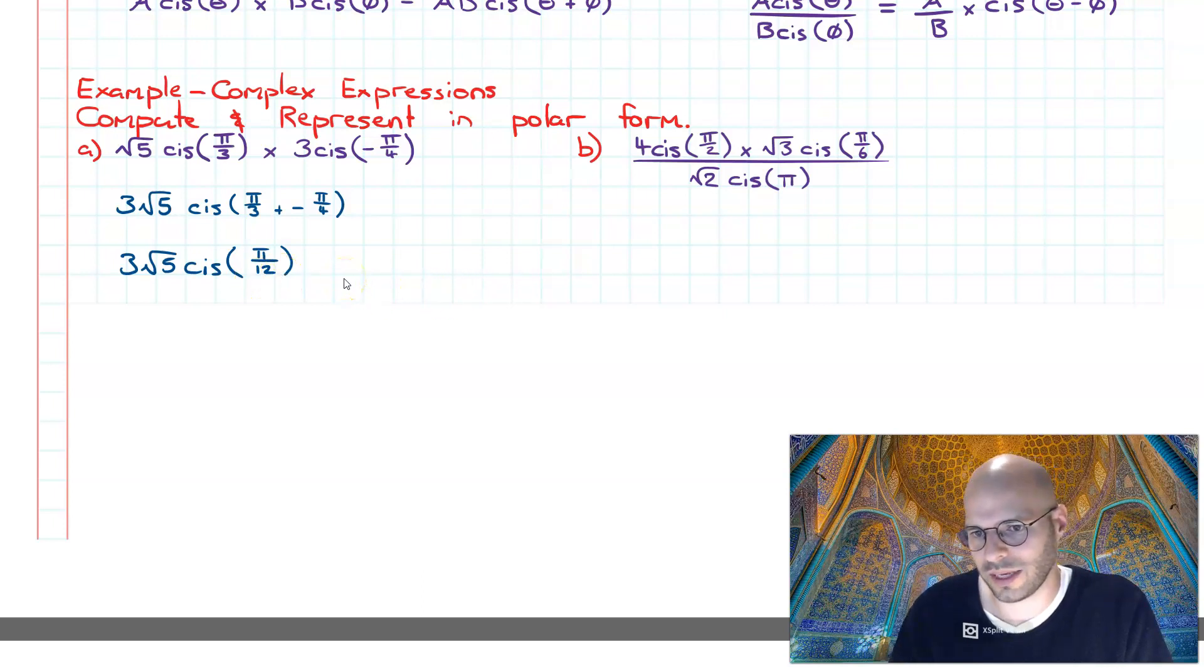Next one, b, we have four cis pi over two times root three cis pi over six, all divided by root two cis pi.